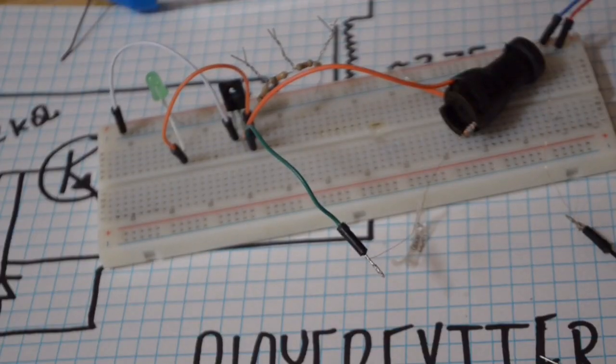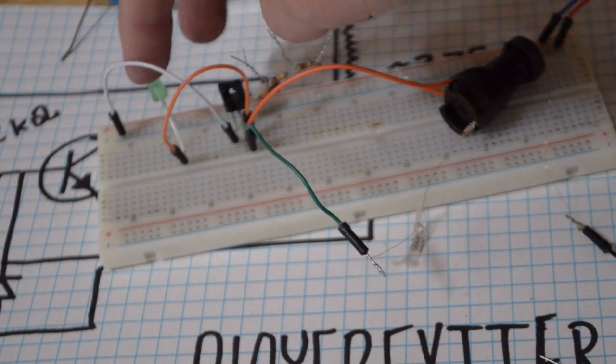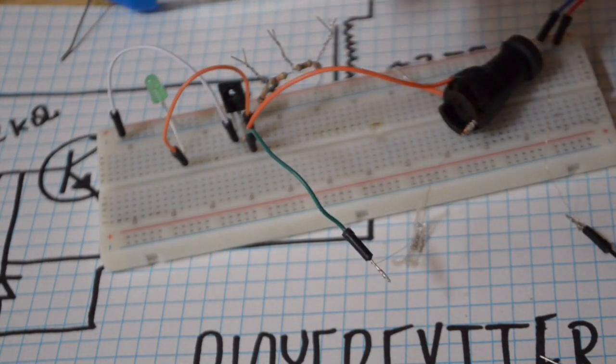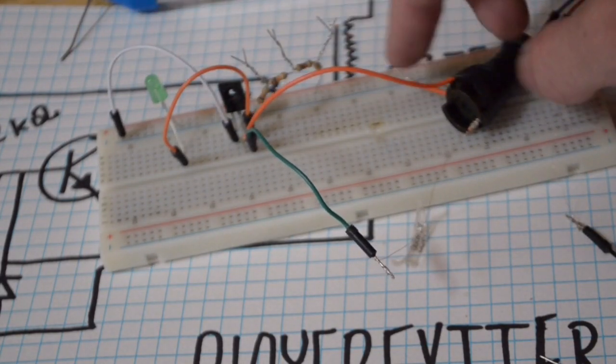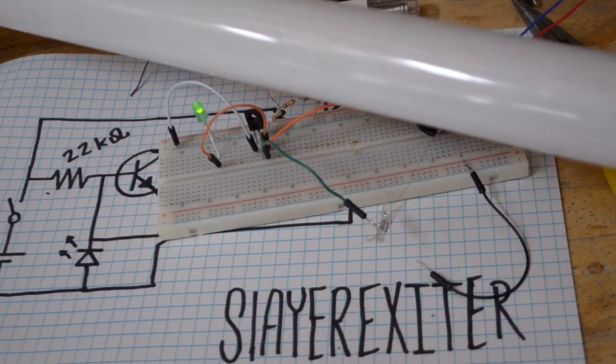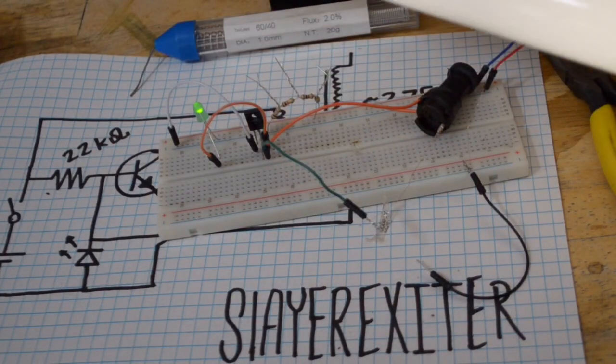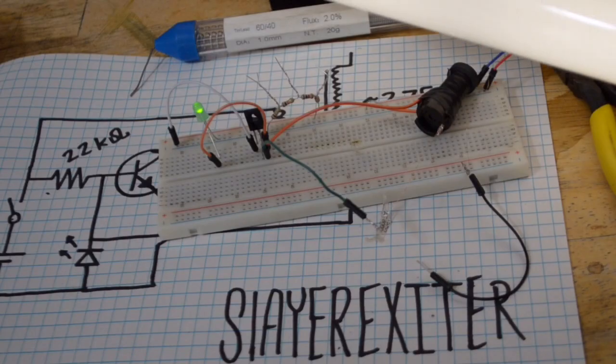So now that everything is completely breadboarded out, let's go ahead and turn on the power. If this light turns on, that means everything should be working. If the light does not turn on, then switch the two connections for your primary coil and that should solve the problem. So let's go ahead and crank up my power supply to nine volts. As you can see, when we bring a fluorescent light near the coil, the tube lights up. This is because of the high frequency resonating from the magnetic field.